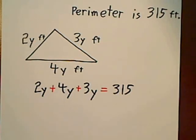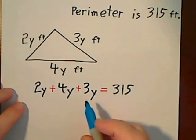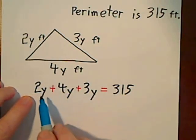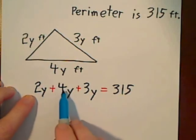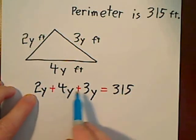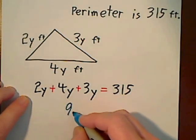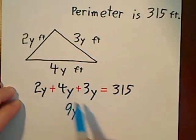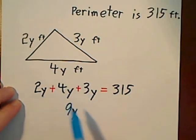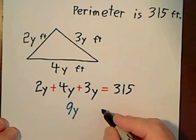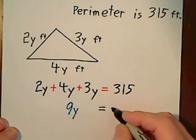So this first step, we'll combine like terms. It's the same variable and exponent, so we just add the coefficients. 2 and 4 gives us 6, plus 3 gives us 9y. All we did was combine the like terms and we got 9y. We'll just bring down what we already had, which was equals 315.